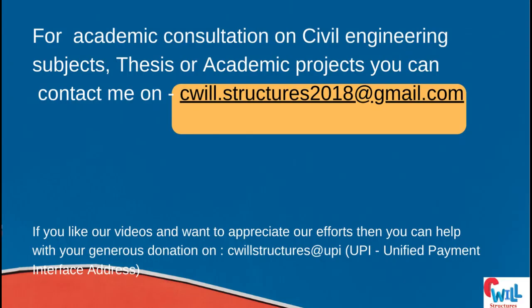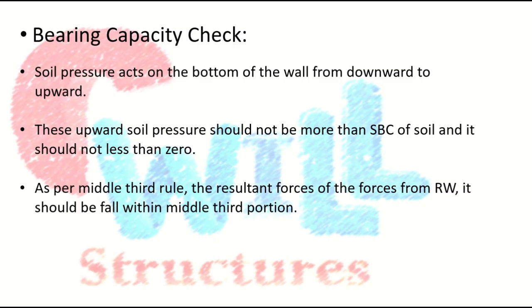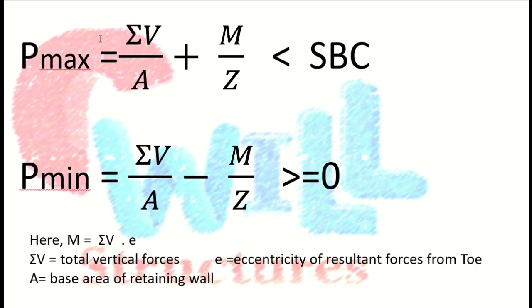Now our third stability check is the bearing capacity check. For this check, we need to verify that the maximum upward pressure of the soil is less than the soil bearing capacity, and the minimum pressure P_min should not be negative (i.e., should be more than zero). We also check that the resultant force falls within the middle third of the base slab.